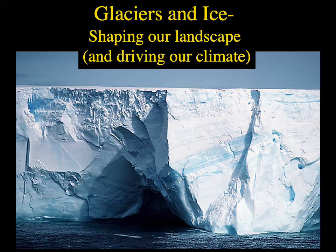Today we're going to talk about glaciers and deserts — the two extremes in temperature. First, I want to talk about glaciers and ice: how they can shape the landscape by physically moving sediment and water around, and also the interplay between glacial ice and our climate system — how one drives the other and vice versa.